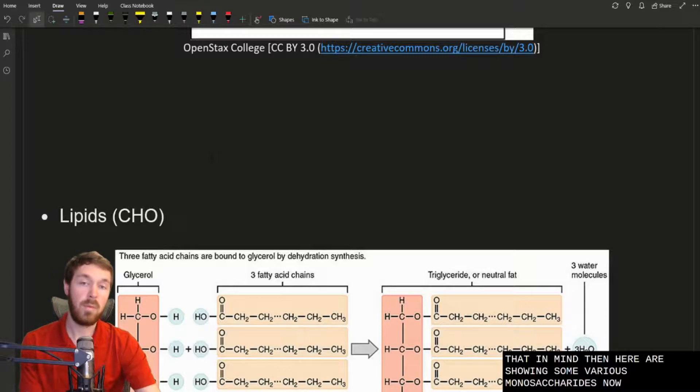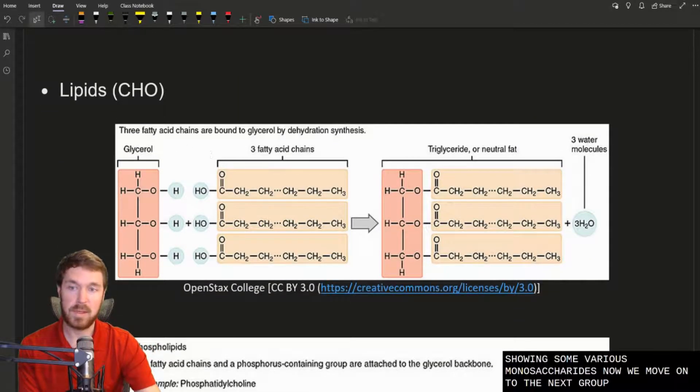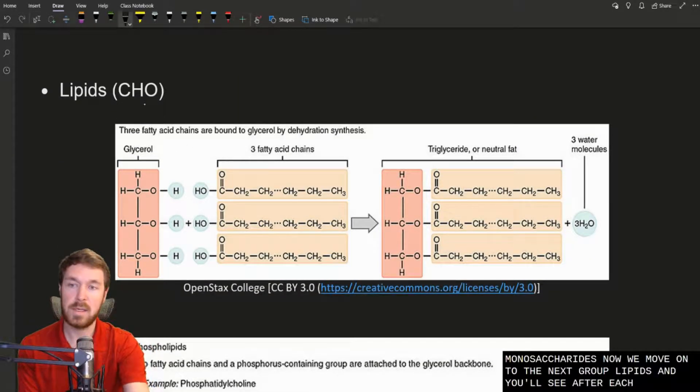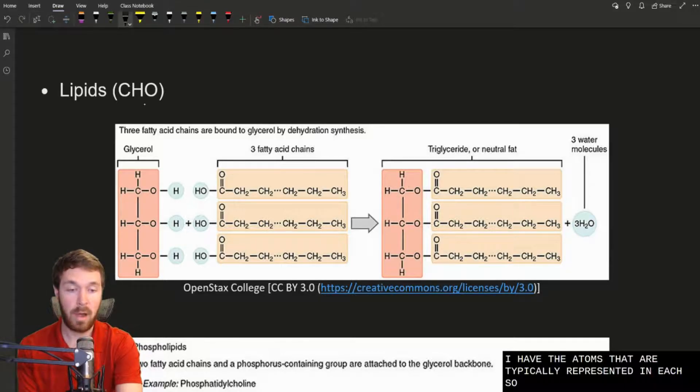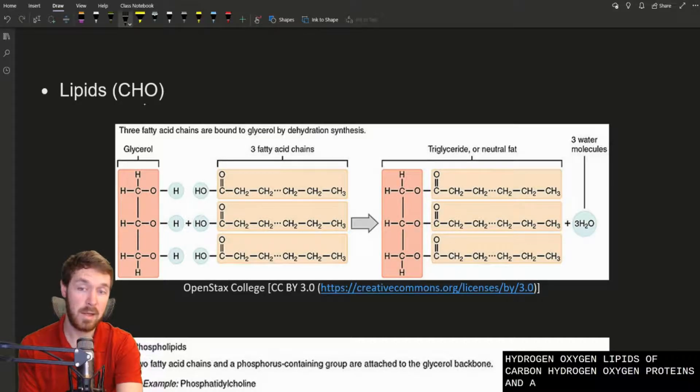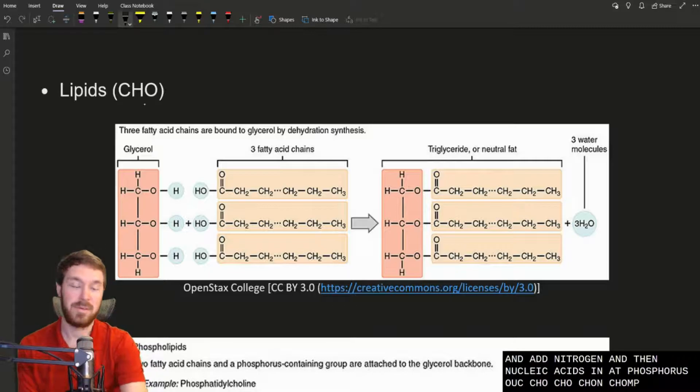Now we move on to the next group, lipids. And you'll see after each of these, I have the atoms that are typically represented in each. So carbohydrates have carbon, hydrogen, oxygen. Lipids have carbon, hydrogen, oxygen. Proteins then add nitrogen. And then nucleic acids then add phosphorus. So you see CHO, CHO, CHON, CHONP. But instead of an M in chomp, it's an N for the nitrogen.